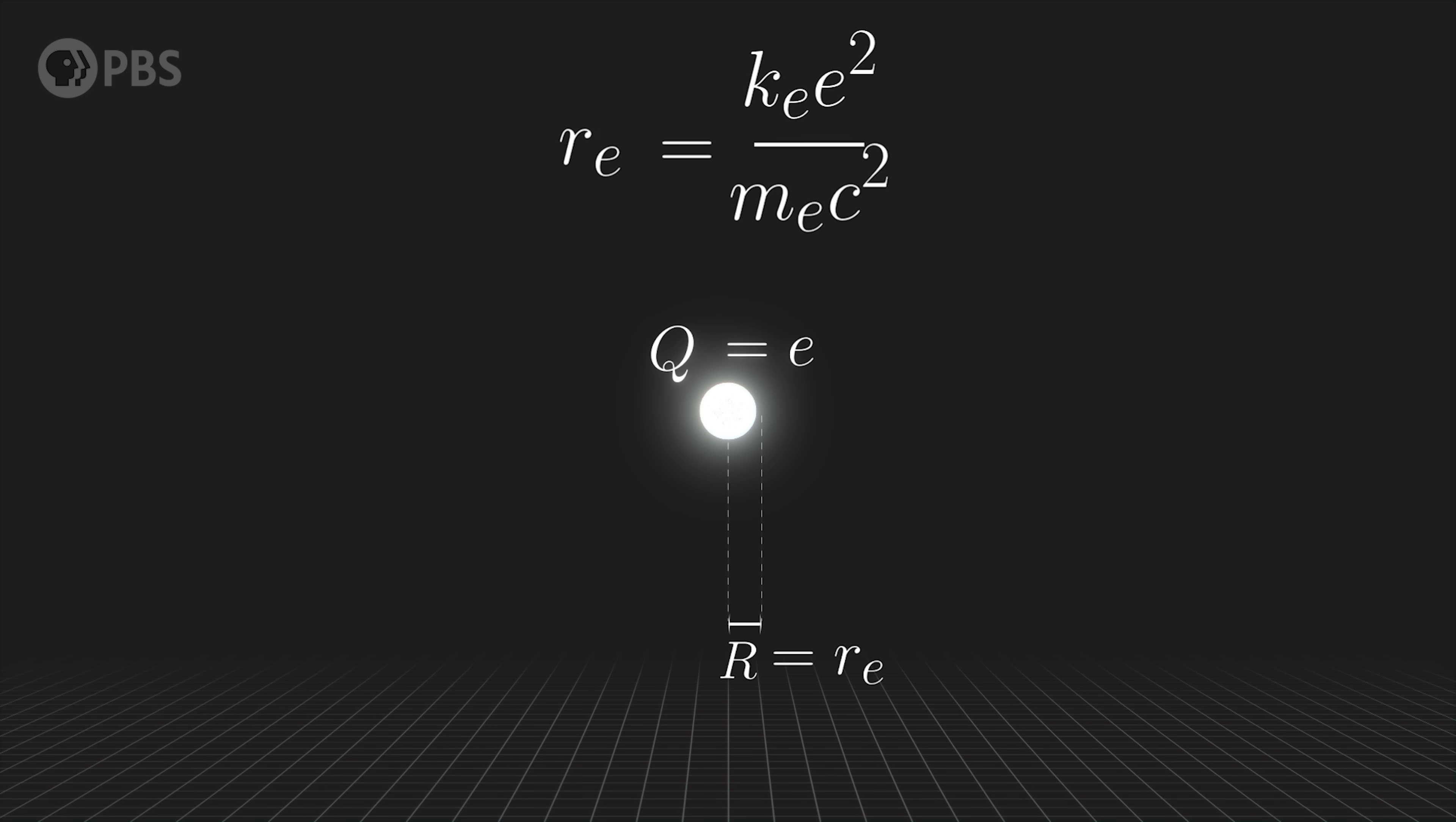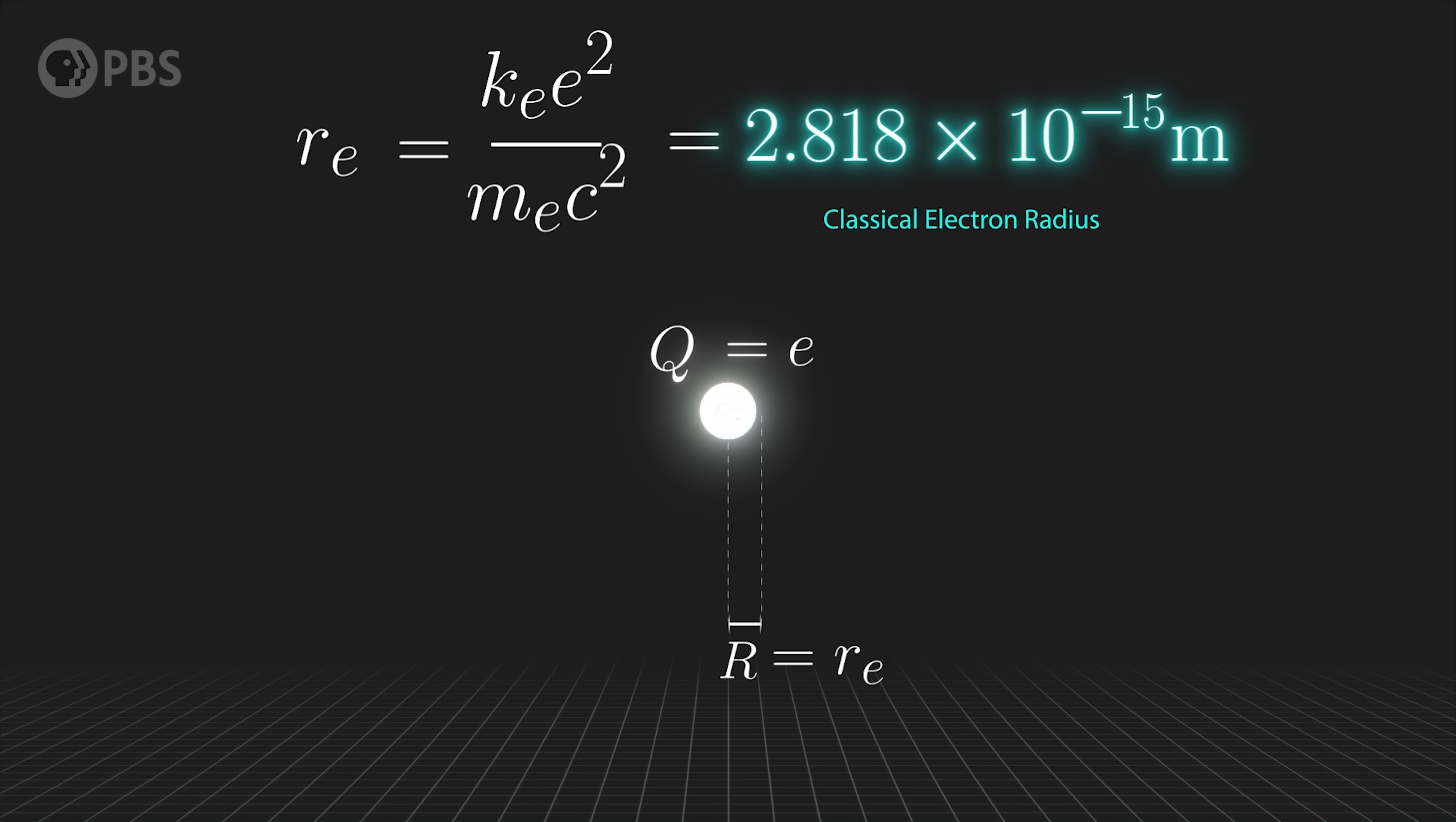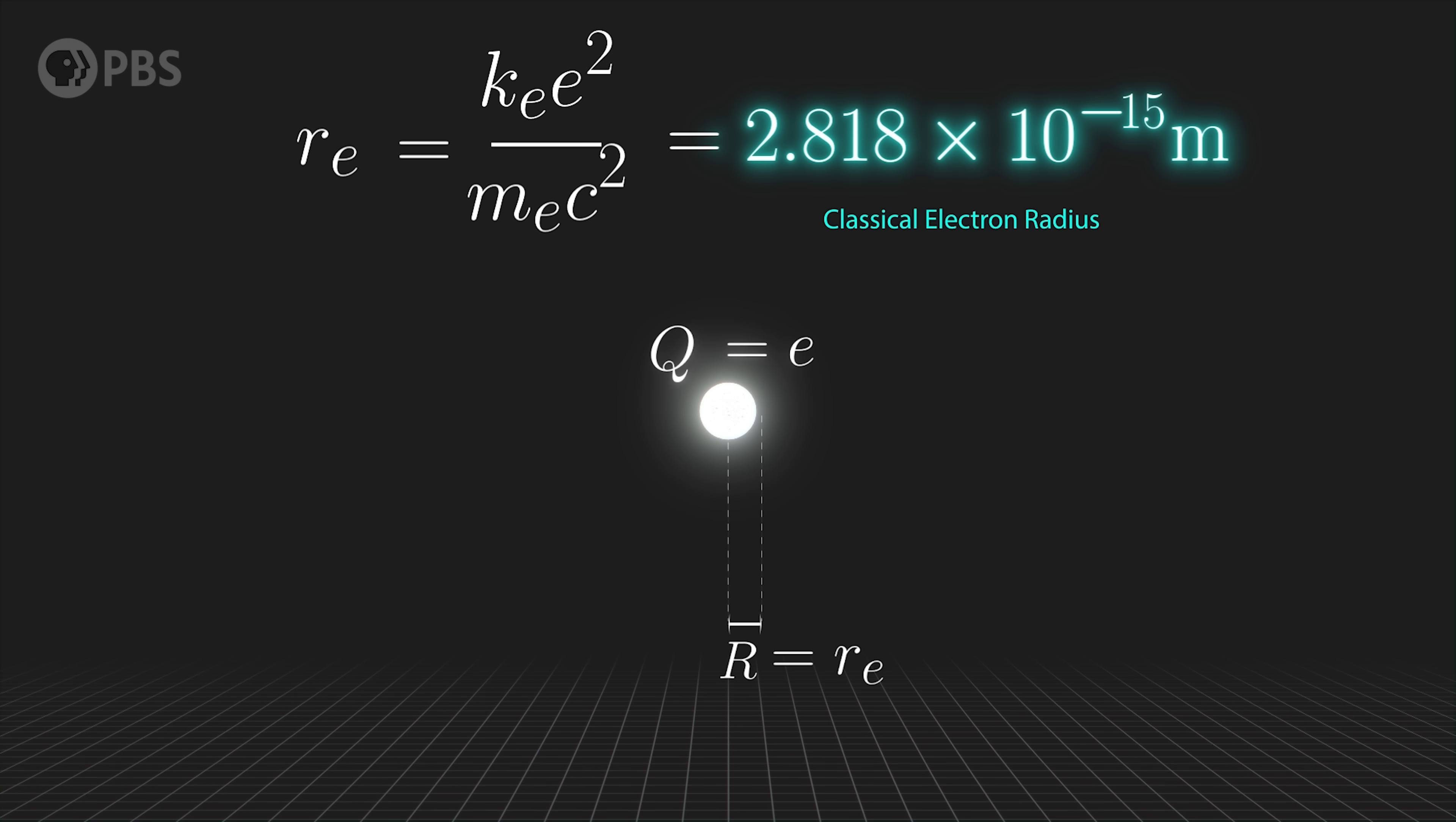Well, around 2.8 by 10 to the power of minus 15 meters. This is the classical electron radius. It's the size an electron would have to be if its mass was all from the potential energy of its contained charge. But it's not the real size of the electron.